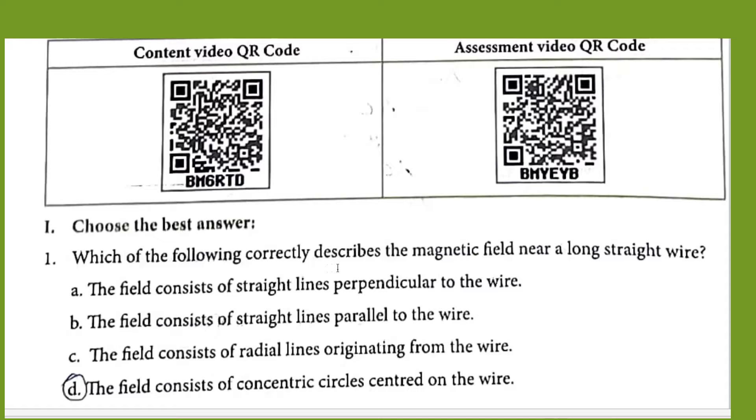Choose the best answer. Which of the following correctly describes the magnetic field near a long straight wire? The field consists of concentric circles centered on the wire. Magnetic field lines are always concentric circles. They are not straight lines, so omit these two options, and they are not radial lines. This one is the correct answer.